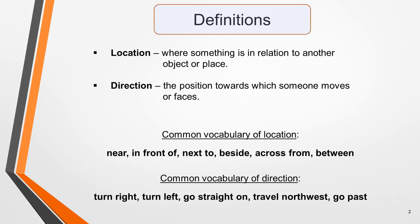Here are definitions of these two types of vocabulary, to make sure that you understand the difference between them, and a few examples of each type. Location is where something is in relation to another object or place. Direction is the position towards which someone faces or moves.